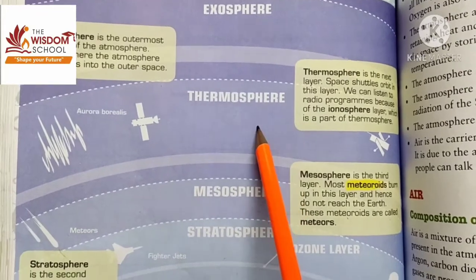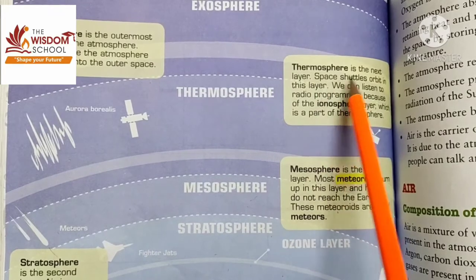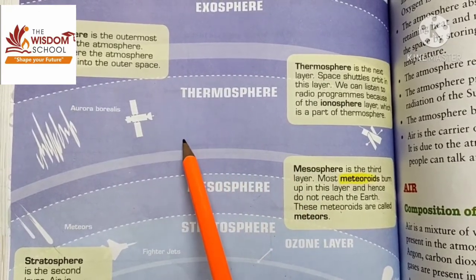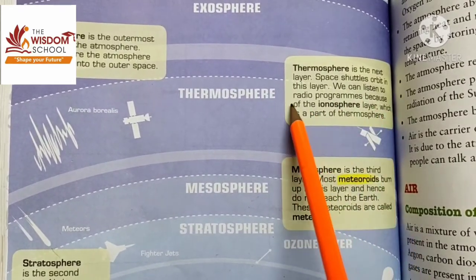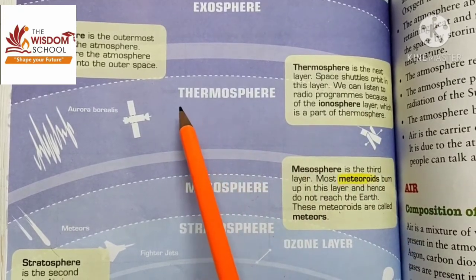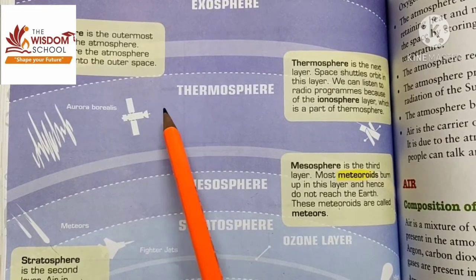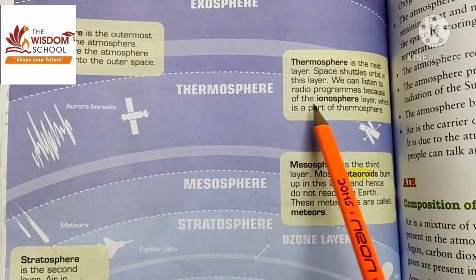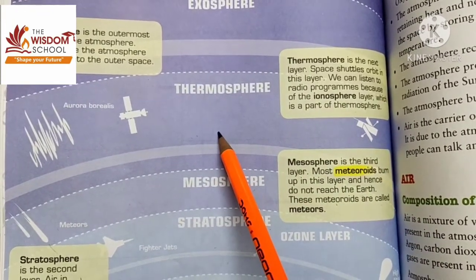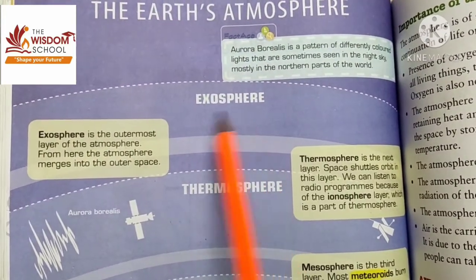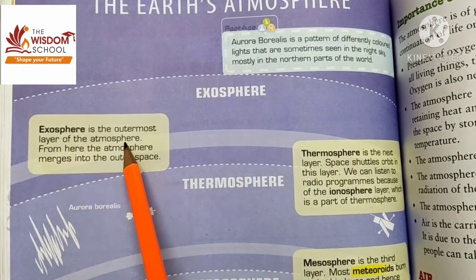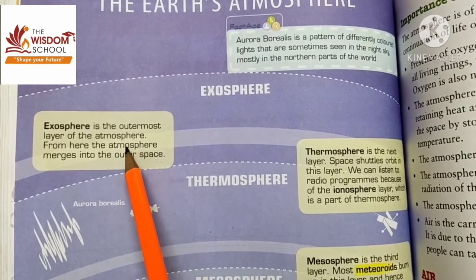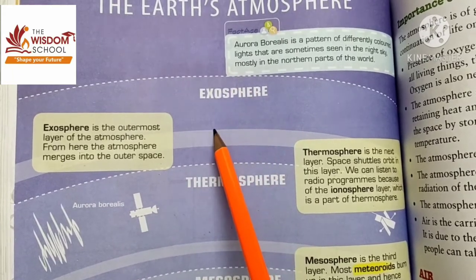After that comes thermosphere. Thermosphere is the next layer, and space shuttles orbit in this layer. We can listen to radio programs because of the ionosphere layer, which is part of the thermosphere. After that comes exosphere, which is the outermost layer of the atmosphere — from here, the atmosphere merges into outer space.